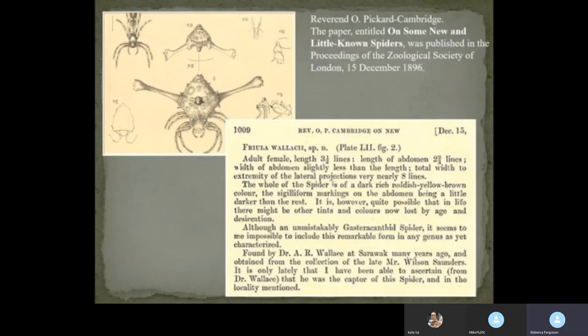This very short article was written in the Proceedings of the Zoological Society of London, dated the 15th of December 1896. And there's the paper — if we look at it, on the top left you will see a wonderful drawing of a spider. Reading the paper, we see the spider is called Friula wallacei, and at the very bottom it states: 'found by Dr A.R. Wallace of Sarawak many years ago, having obtained it from the collection of the late Mr William Saunders.' It was actually identified by Wallace himself on a visit to the Natural History Museum to talk to Pickard-Cambridge. So we now know that Wallace did collect spiders — at this moment only one, but one is better than none.